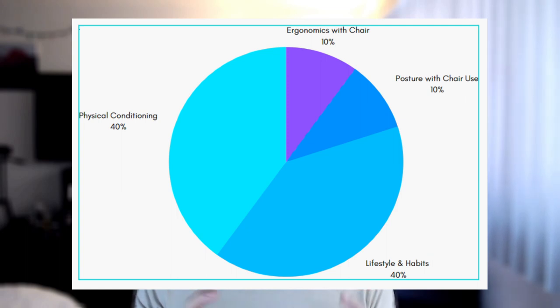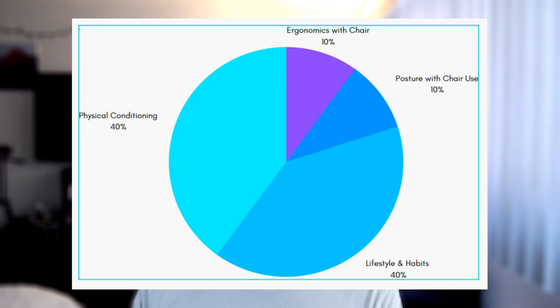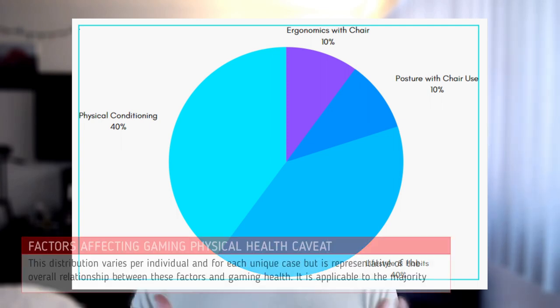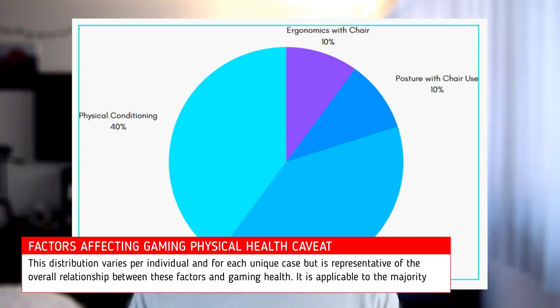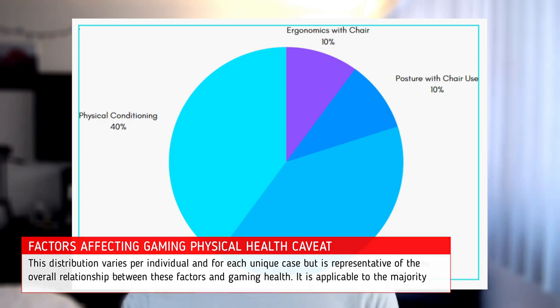I want to make sure you realize that ergonomics is overall a small part of the picture as it relates to our overall gaming health. So if you prefer the standard keyboard, that's fine — we just need to understand how it affects risk. There's slightly more risk, but the most important thing with the keyboard is your wrist angle, which we'll discuss more in the later sections.